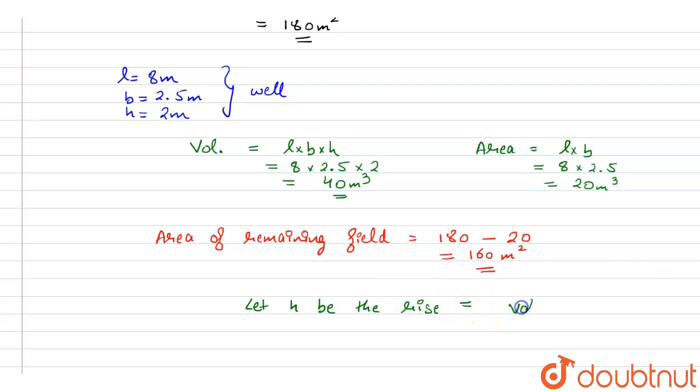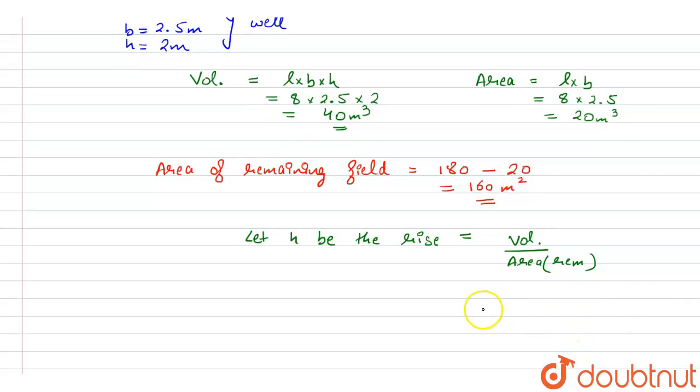to the volume of the well divided by the remaining area. So this will be equal to 40 divided by 160. This zero will be cancelled by this zero, 16 will be cancelled by 4, we will get the value as 0.25 meters, or it can be termed as 25 centimeters. This is our answer.